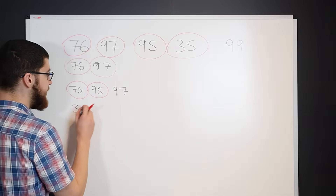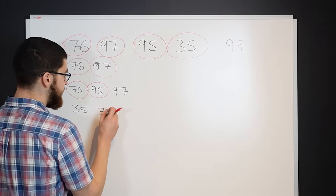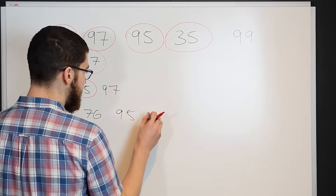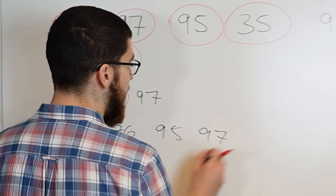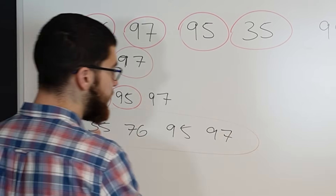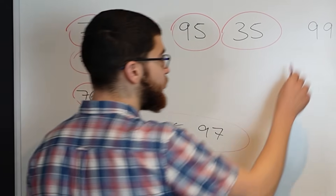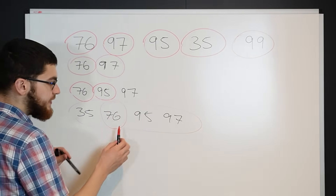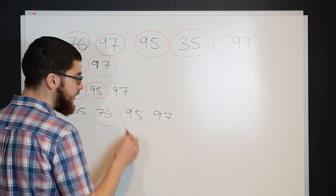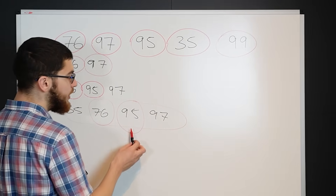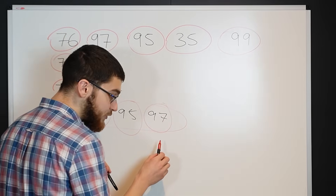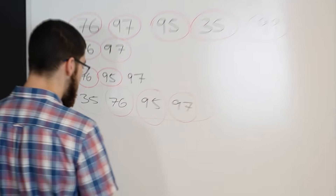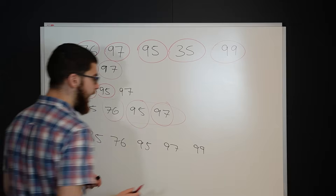So we've got 35, 76, 95, 97, and now all of these are sorted, so we only need to sort one last one: 99. Look at the middle — is it bigger than? It's bigger than. Look at this one — is it bigger than? It's bigger than. Look at this one — is it bigger than? It's bigger than. And now we have a sorted list.